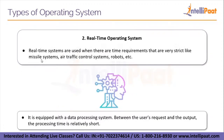The second type of operating system is a real-time operating system. These are used when there are very strict time requirements, such as in missile systems, air traffic control, and robots. It is equipped with a data processing system, and the processing time between the user's request and the output is relatively short compared to a normal operating system that the common public uses.